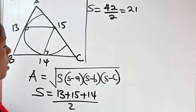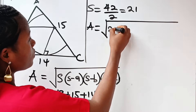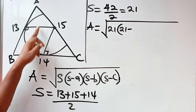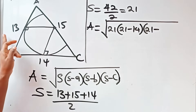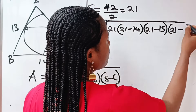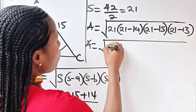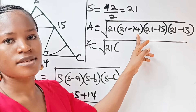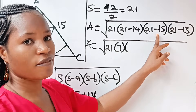The area equals the square root of 21 times (21 minus 14) times (21 minus 15) times (21 minus 13). So that is the square root of 21 times 7 times 6 times 8. Now 6 times 8 is 48, and 48 times 7 is 336.